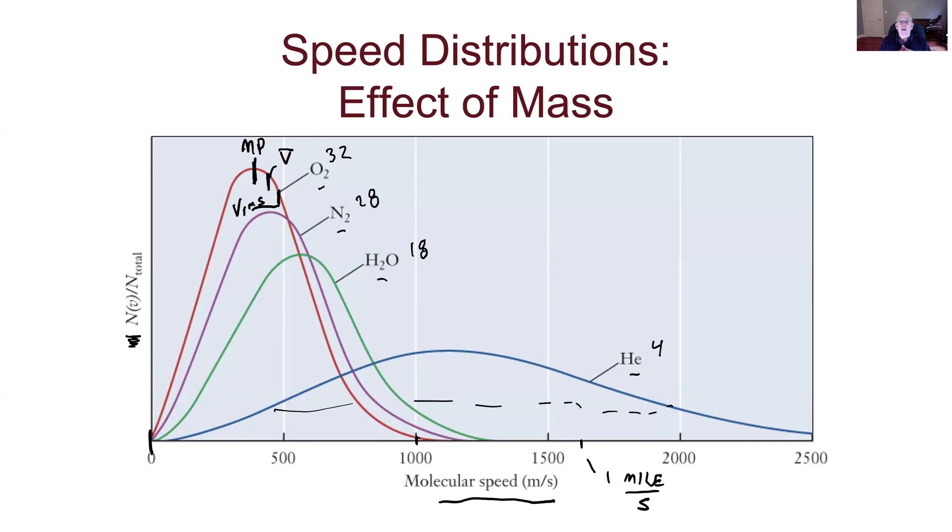The reason for that is remember that the thing we're plotting on the y-axis is the fraction of the molecules. So that says that the total area under this curve has to be the same for all of them because the sum of all the fractions has to be equal to one. All the molecules have one speed or another. And so in the helium case for the very light molecule, they're stretched out across a lot of different speeds. That means there's fewer molecules having any one speed, because I've just got more speeds that there are molecules moving at. So that shows us what happens for different masses.